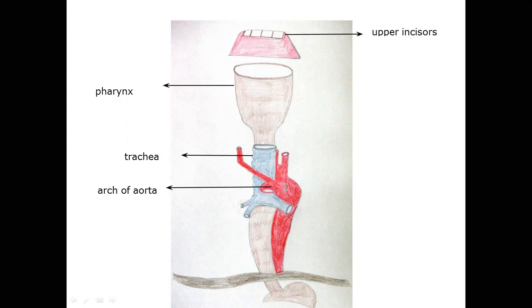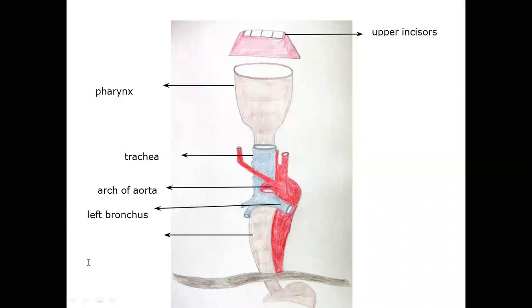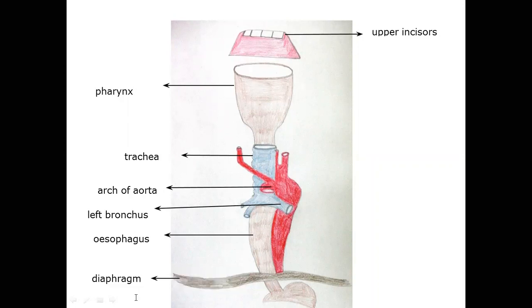The next structure is the left bronchus, right here. The left bronchus is an important structure. And the most important structure we are discussing today is the esophagus — this whole structure from here to here is the esophagus, and it is composed of stratified squamous epithelium. The next important structure is the diaphragm, right here.